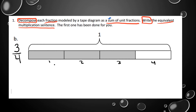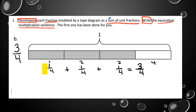Each shaded box equals one-fourth. So this box is one-fourth, this box is one-fourth, and this box is one-fourth. Adding these three pieces together equals three-fourths. That is how we write a sum of unit fractions — these are our unit fractions and three-fourths is our sum.